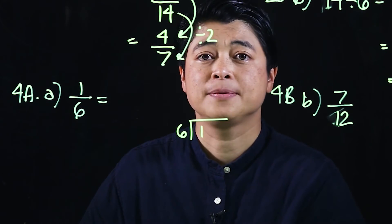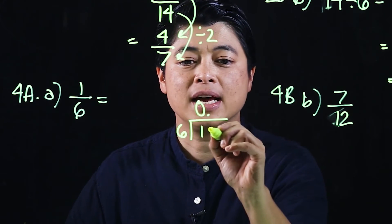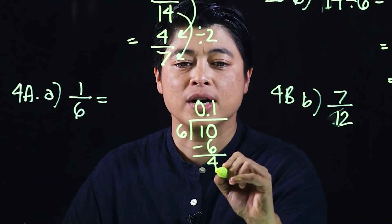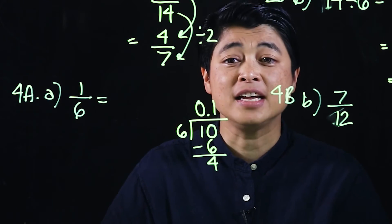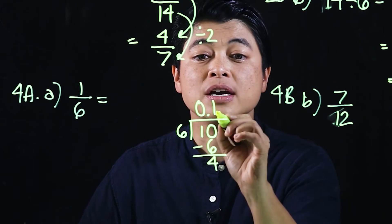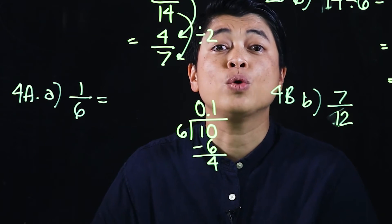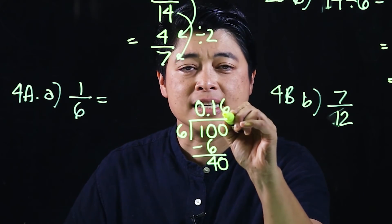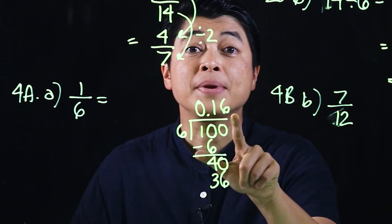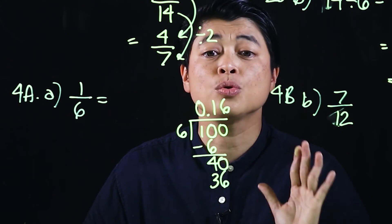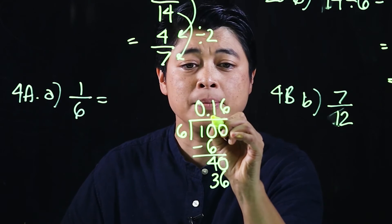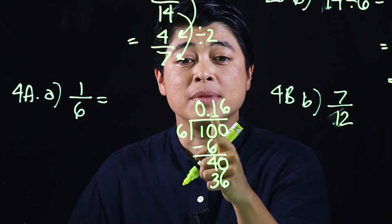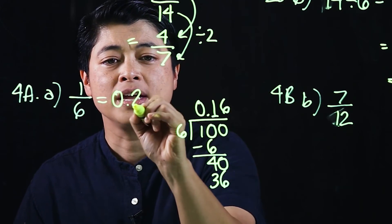For letter a, this is 1 divided by 6. We get 0, add a zero, divide to get 1 — that's 6, subtract to get 4. Since it asks for one decimal place, we need another digit, so we add another 0 and divide: that gives 6, meaning 36. We can stop here. To round to one decimal place, we underline the first decimal digit and look at the next number.